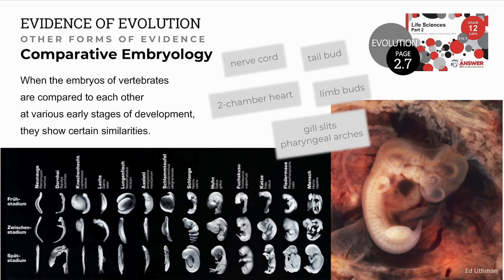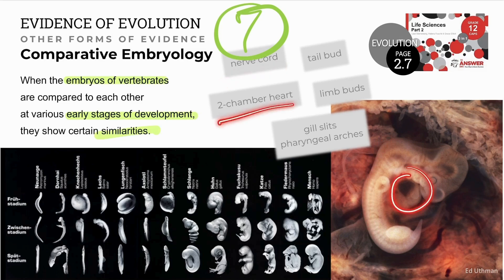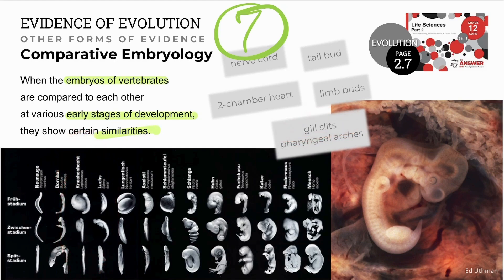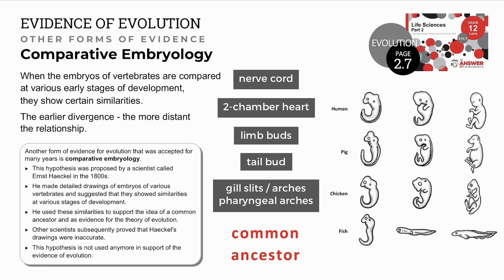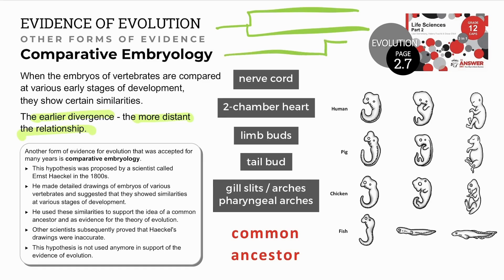Comparative embryology is the seventh evidence of evolution. If we compare the embryos of different vertebrates at early stages of development, we see certain similarities and some differences. In a seven-week-old human embryo, we see a nerve cord, a two-chambered heart, tail bud, limb buds, and pharyngeal arches comparable to gill slits in fish embryos. Scientists suggest that the more similar the embryos, the more recent the common ancestor — the earlier the divergence, the more distant the relationship.